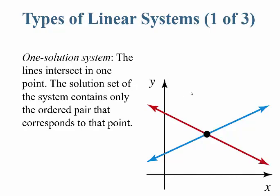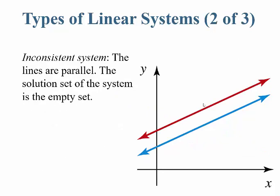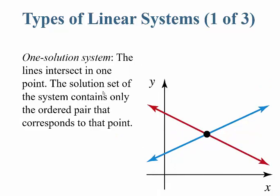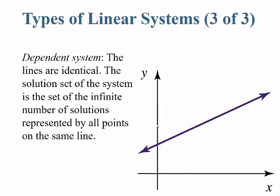To summarize the types of systems: a one-solution system has lines that intersect at one point, and the solution set contains only that one ordered pair. An inconsistent system has parallel lines, so the solution set is empty — no solutions. A dependent system has identical lines, so the solution set is an infinite number of solutions represented by all points on the same line. So: one solution, no solutions, or infinitely many solutions.